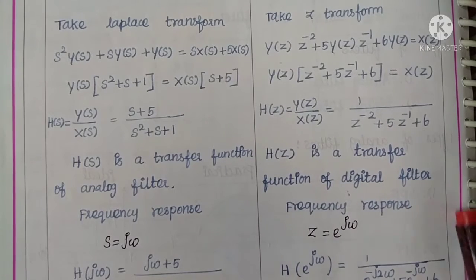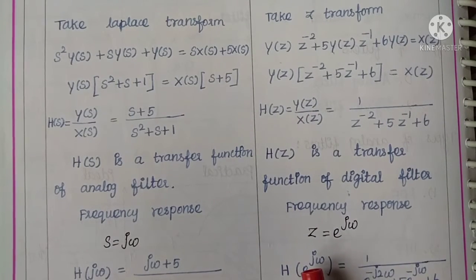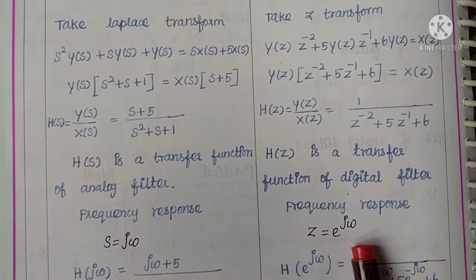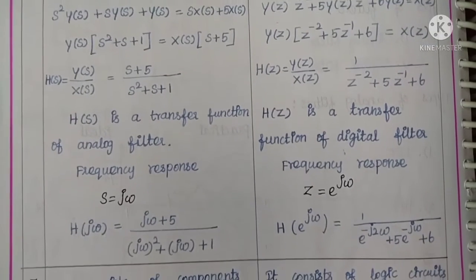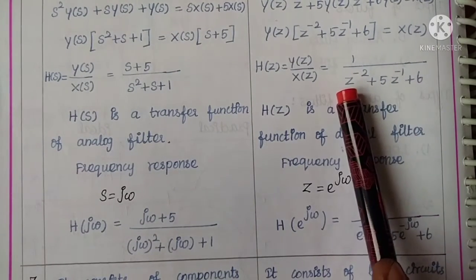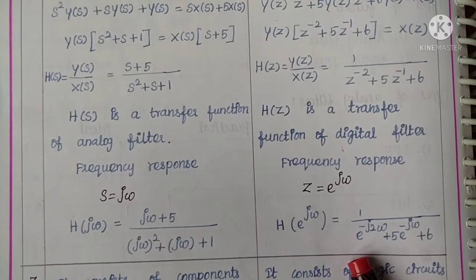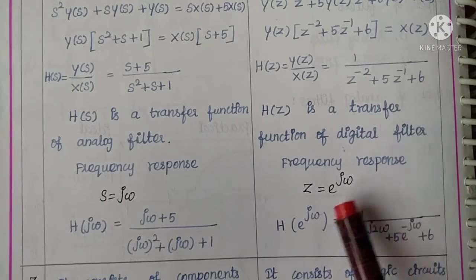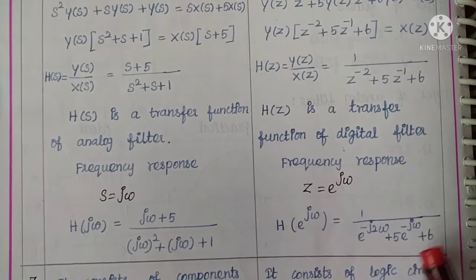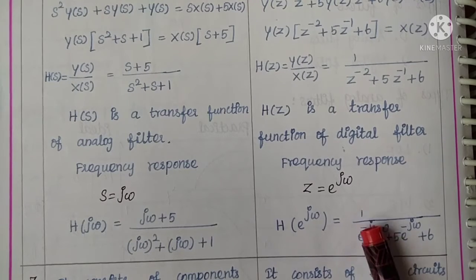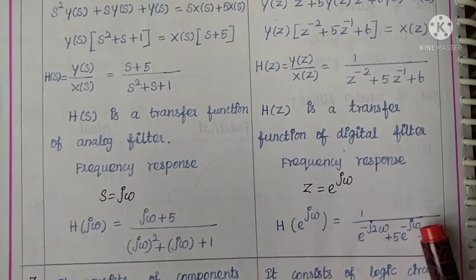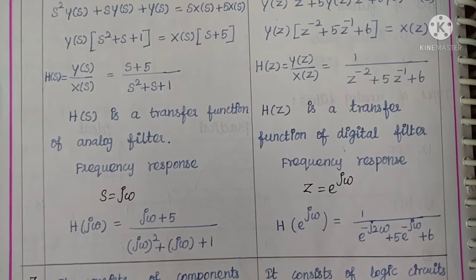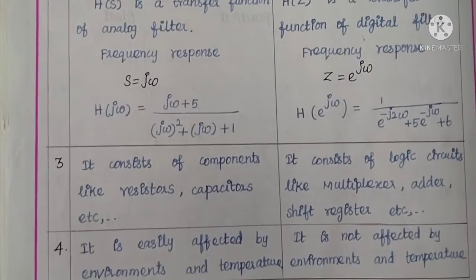For the digital filter, the frequency response can be obtained by substituting z = e^(jω). So H(e^(jω)) = 1 divided by (e^(-j2ω) + 5e^(-jω) + 6). This is the second difference between analog and digital filters.